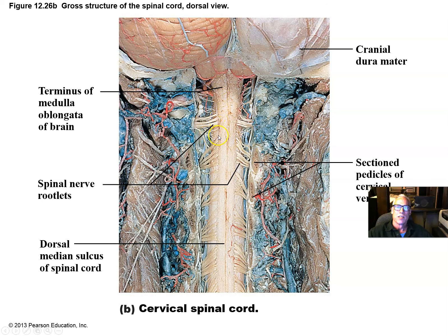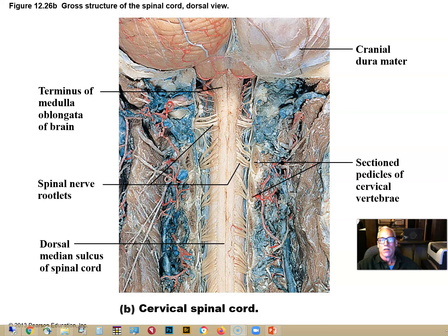Here's a beautiful dissection showing the spinal cord and some of the nerve roots. The oval-shaped structures are where the vertebral bones were cut — the pedicles of the vertebrae — and the spinal nerves emerge beyond that point. The nerve roots are shown here, and this is a beautiful dissection showing the ventral nerve roots in the cervical region of the spinal cord.